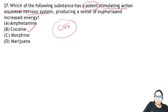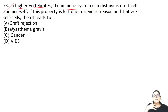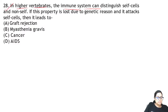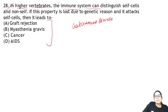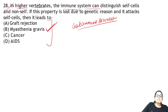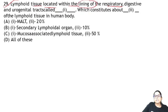Zoology Question 28: in higher vertebrates, the immune system can distinguish between self and non-self. When this property is lost, it attacks its own cells — this is called an autoimmune disorder. Question 29: lymphoid tissue located within the lining of respiratory, digestive, and urogenital tract is called MALT — mucosal associated lymphoid tissue.